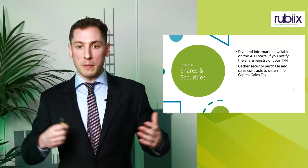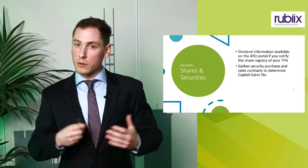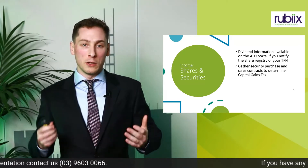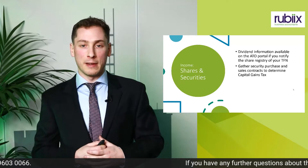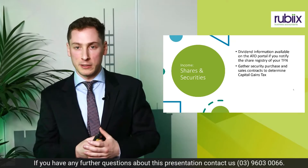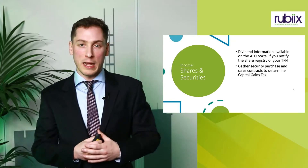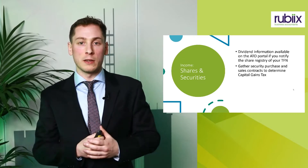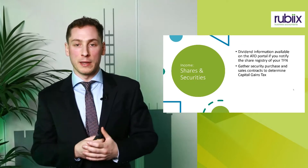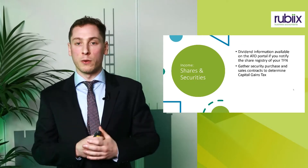Next, I'll speak about shares and securities. Similar to salary, your dividend information should already be available on the ATO portal. This is only possible if you've notified your relevant share registry of your TFN. You can log on to your share registry, such as Computershare or Link, and notify your TFN there. If you haven't already done so, I would recommend doing that — therefore you wouldn't have to be gathering all the dividend information every financial year to provide to us.